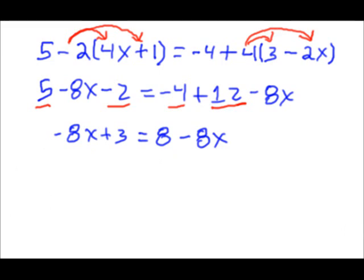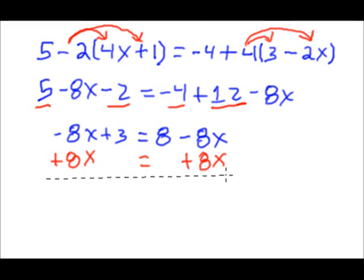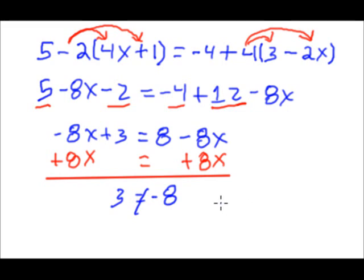Now we can go ahead and combine our like terms, just like a normal equation. I've got five and negative two on the left, and negative four plus twelve on the right. Five minus two is three, so I've got negative eight x plus three equals eight minus eight x. Now I'm going to add eight x to both sides. Eight x minus eight x is zero, and I'm left with three equals negative eight. That's a contradiction — three doesn't equal negative eight.